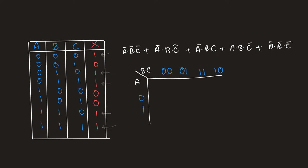For A=0 and BC=00, the output is 1, so we put 1 in that cell. For A=1 and BC=00, we have 0. For A=0 and BC=01, we have 0. For A=1 and BC=01, that's also 0. For A=0 and BC=11, the output is 1, so we note it down as 1. For A=1 and BC=11, all of them are ones so our output will be 1.